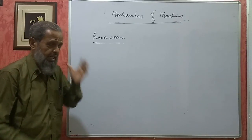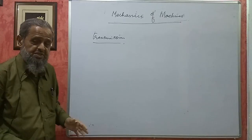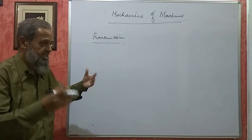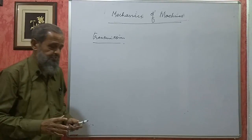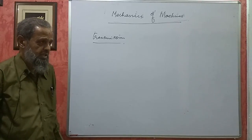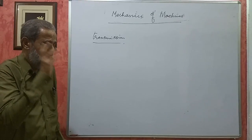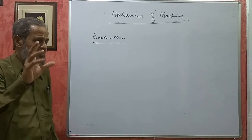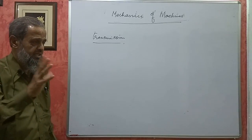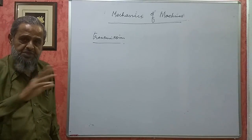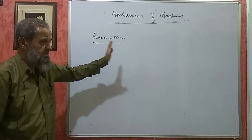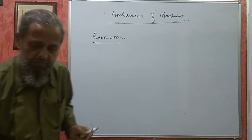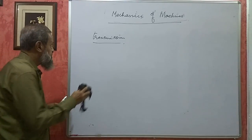A very common example all of us would have seen is the transmission of power in a floor mill. There, the motor is rotating — when you switch on a motor its shaft rotates. That motion of the shaft of the motor is to be transmitted to the shaft of the mill. Two pulleys are mounted on these two shafts and an endless belt is passed over them, transmitting power from the motor shaft to the mill shaft.